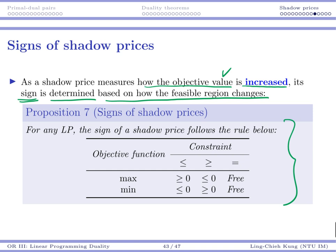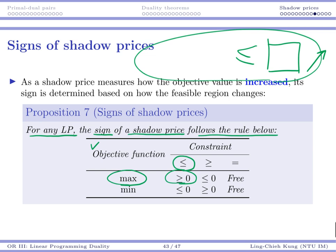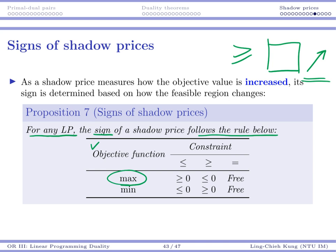The following proposition should be very clear and intuitive. For any linear program, the sign of a shadow price follows this rule: if your objective function is a maximization one and your constraint is less than or equal to, then when the right-hand side is increased by one, your feasible region becomes larger, providing an increment. So your amount of increase would be either positive or at least zero. On the other hand, if this is a greater than or equal to constraint, then when your right-hand side is increased, that makes the constraints tighter, and the amount of increase will be negative or at most zero.